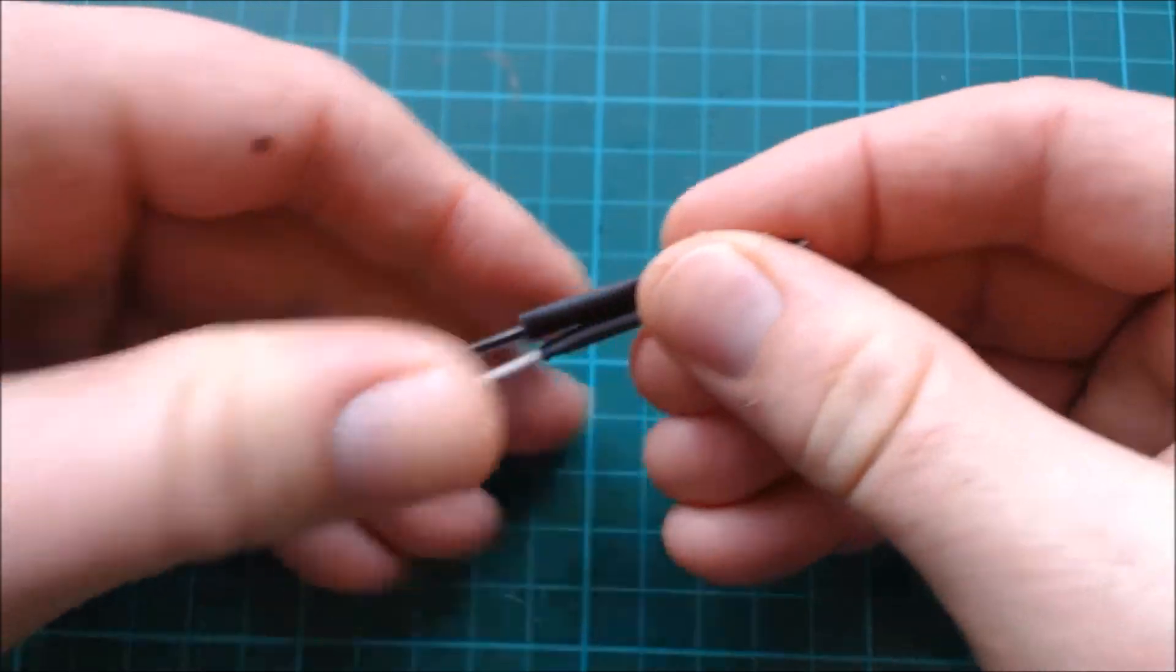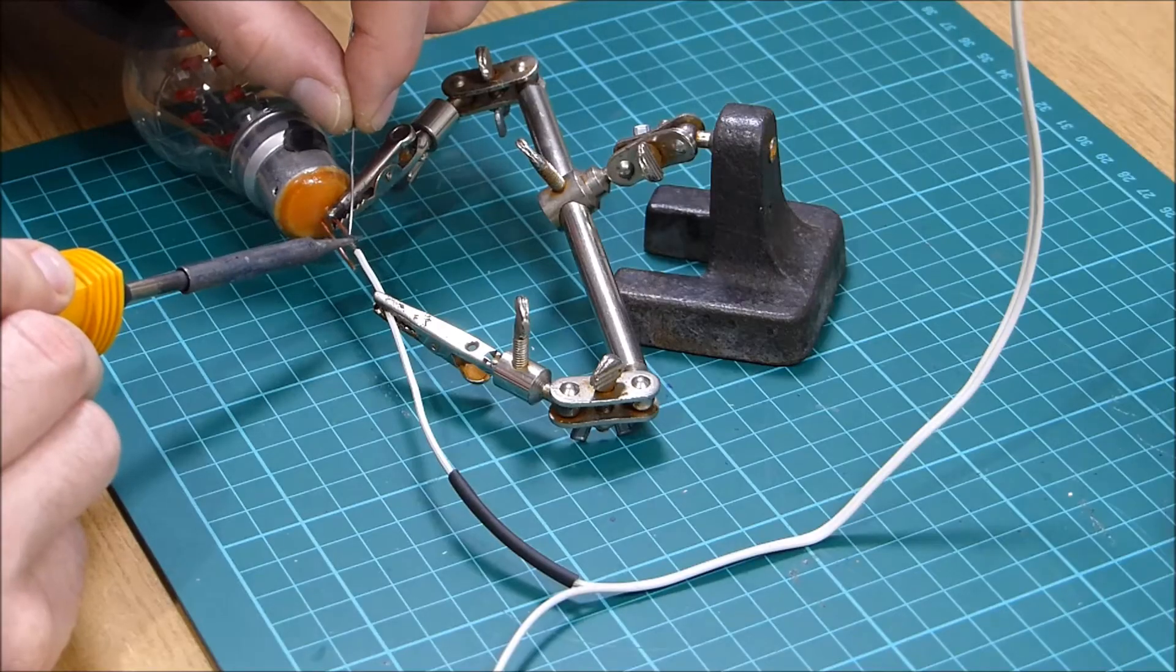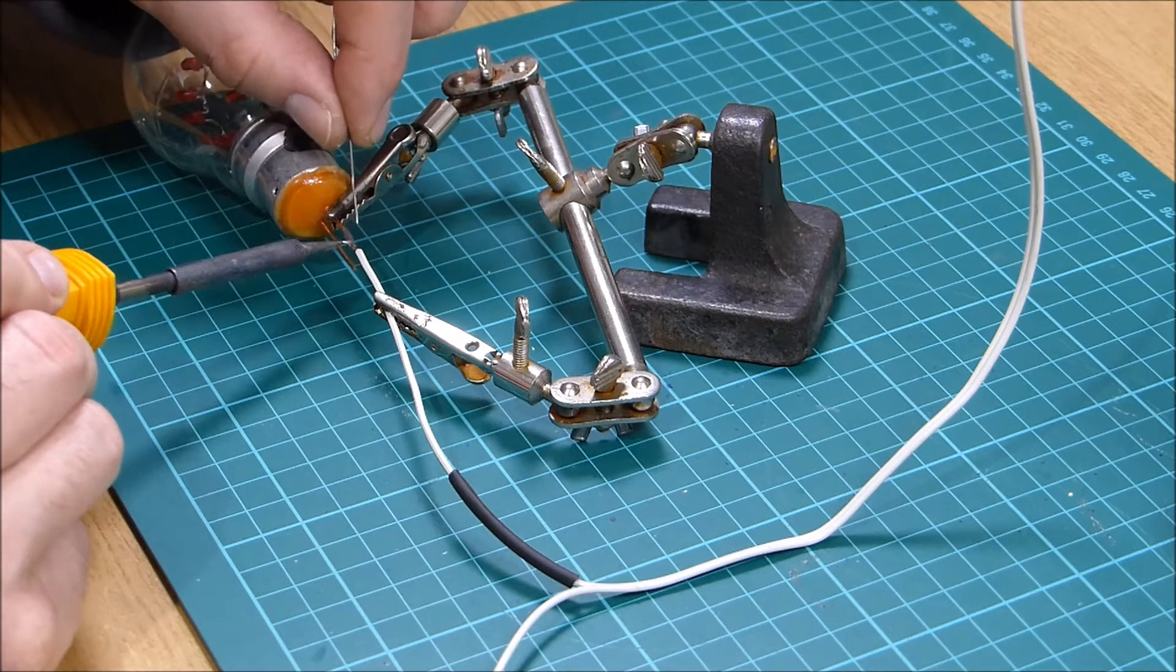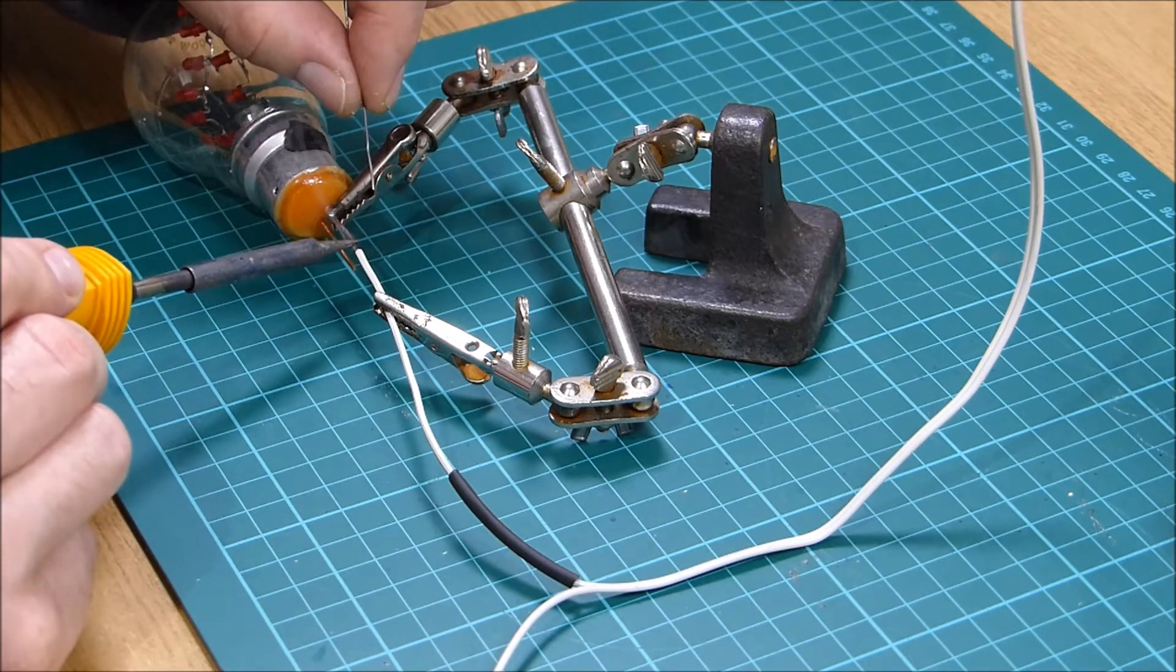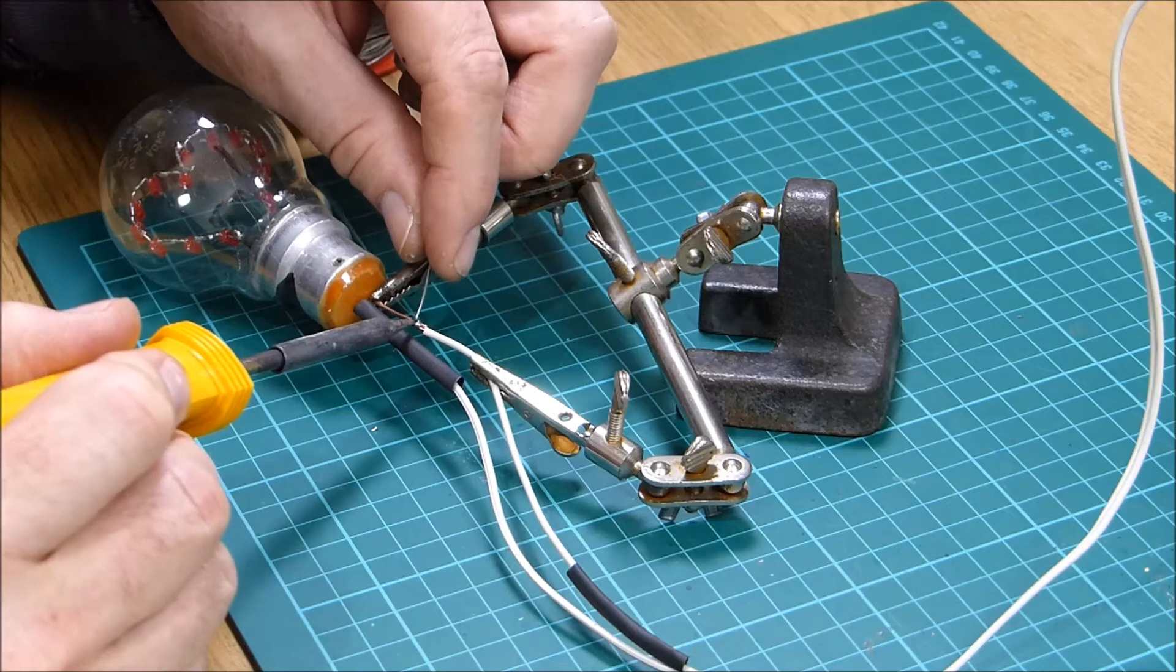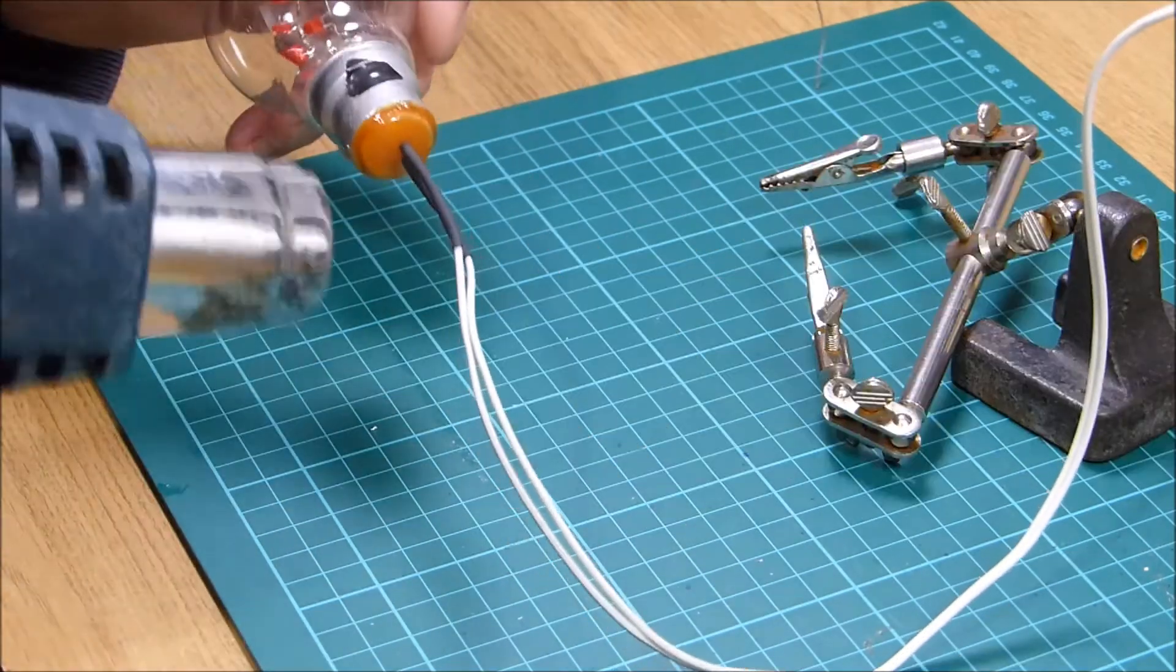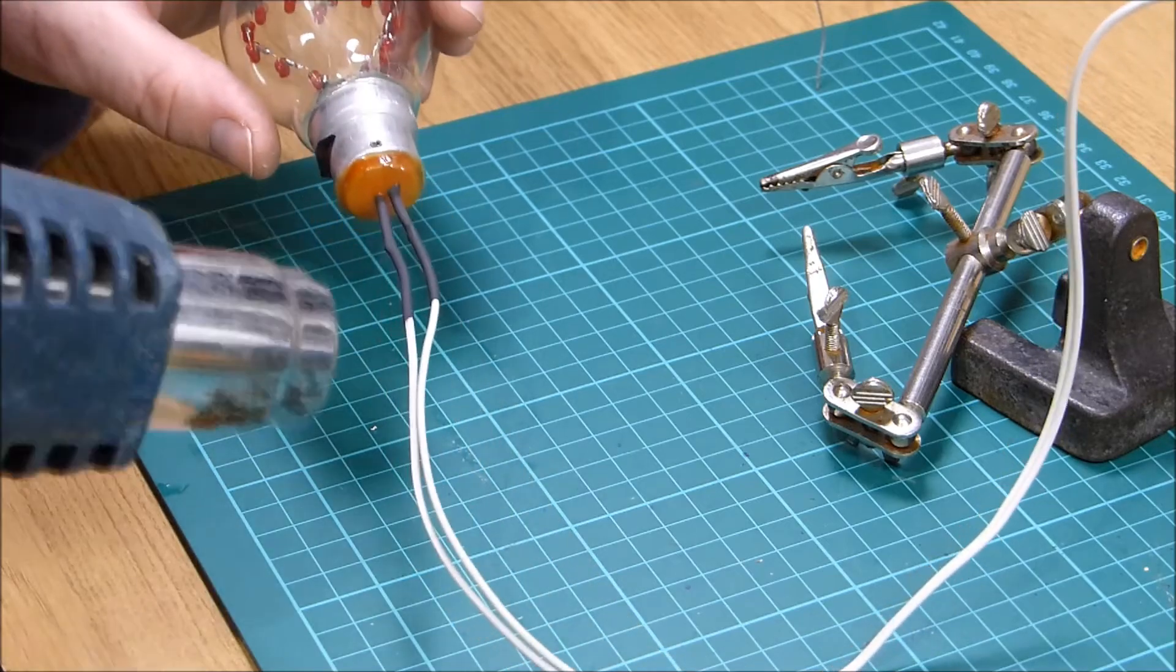Push some heat shrink tubing onto the twin wire. Then solder the wires to the leads on the bulb. I have soldered the plain wire to the positive side of the LED heart, and the wire with a black stripe to the negative side. And finally heated the heat shrink tubing to protect the connections.